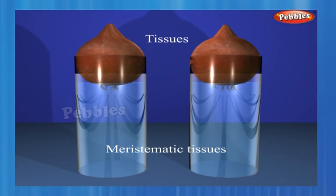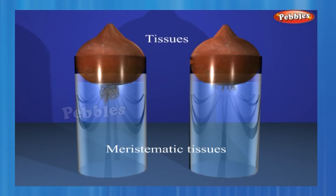Take two glass jars and fill them with water. Take two onion bulbs and place one on each jar as shown in the figure. Observe the growth of roots in both the bulbs for a few days. Measure the length of roots on day 1, 2 and 3. On day 4, cut the root tips of the onion bulb in jar 2 by about 1 cm. After this, observe the growth of roots in both the jars and measure their lengths each day for 5 more days and record the observations in a table.